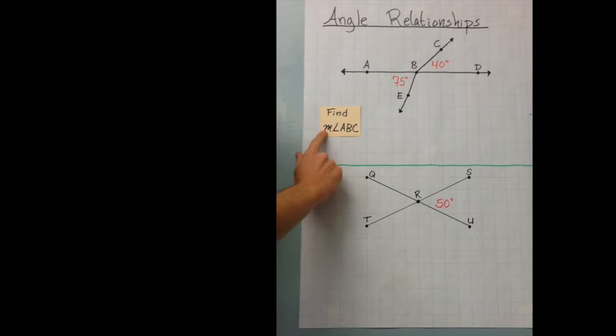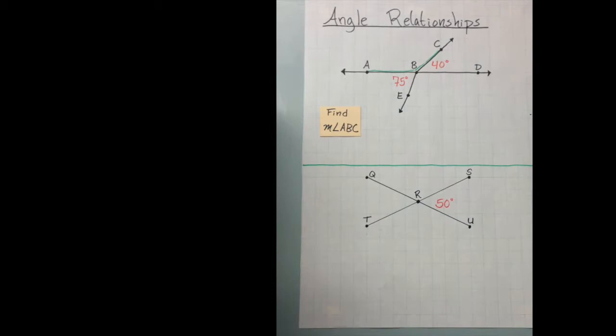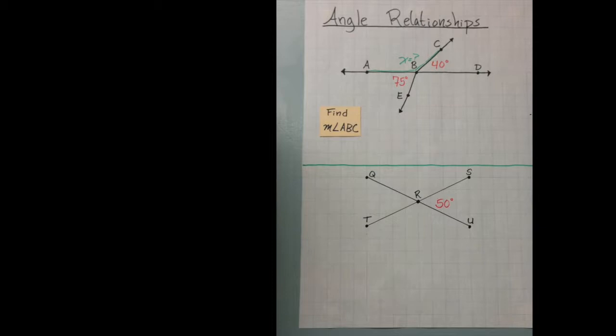We have to find the measure of angle ABC. Well, as you can see, there's nothing written inside of angle ABC. So we have a problem. What is it? We don't know. But we do know that the measure of CBD happens to be 40 degrees. We also know that ABD is a straight line.